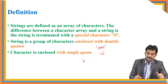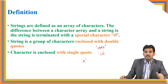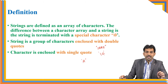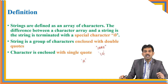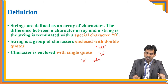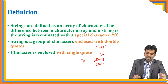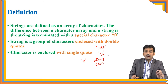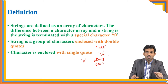A character is enclosed with single quotes, while a string is enclosed with double quotes. C does not support strings directly. By using the character type, you achieve the string data type. We don't have any keyword or data type called string, so we achieve it using character type only. A single character is enclosed with single quotes; a string is a collection of characters enclosed with double quotes.